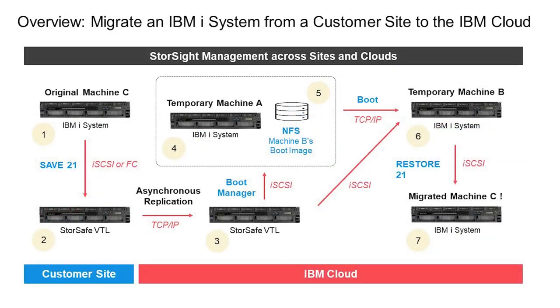There are seven steps that are necessary to migrate an IBM i system to an IBM or MSP cloud. The first thing to note in this diagram is that there are two sites: the customer site and IBM cloud.